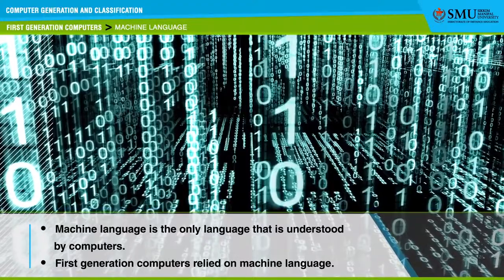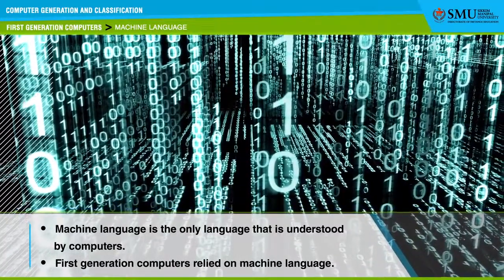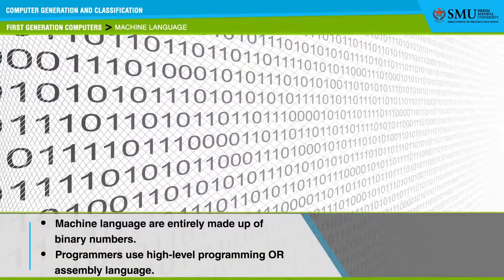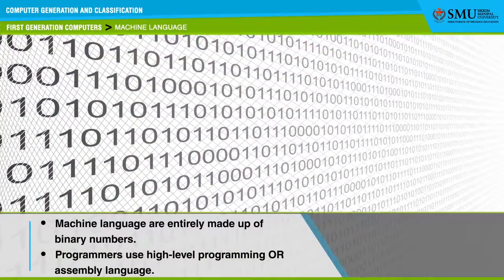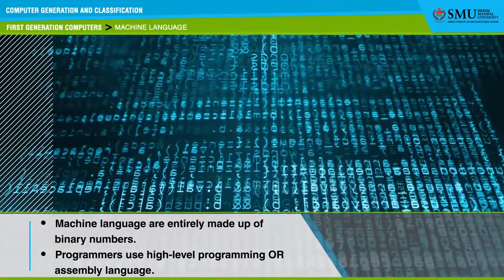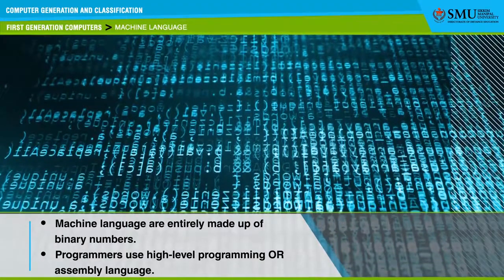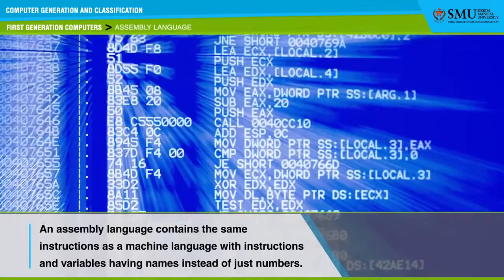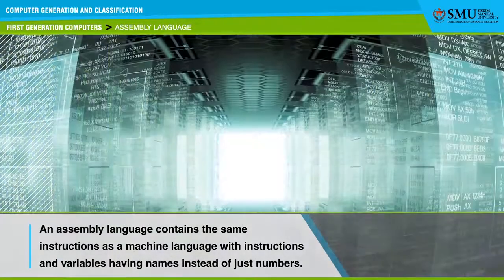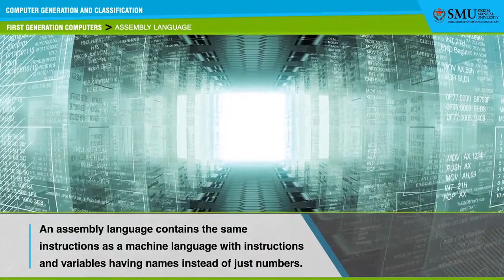First generation computers relied on machine language to perform operations and could solve only one problem at a time. Machine language is entirely made up of binary numbers and therefore difficult to understand. Computer programmers therefore use either high-level programming languages or an assembly language. An assembly language contains the same instructions as a machine language, with instructions and variables having names instead of just numbers.